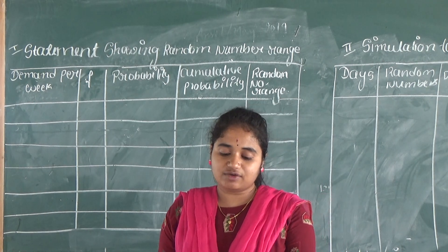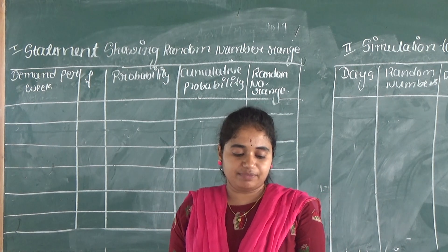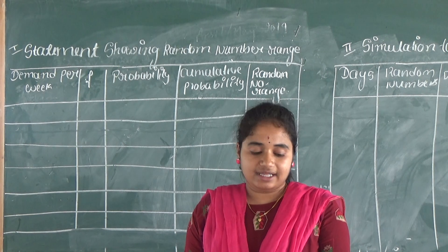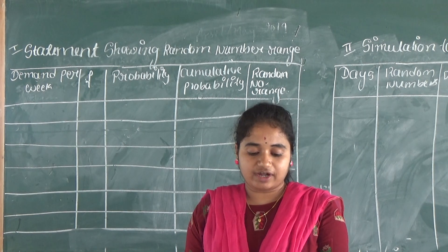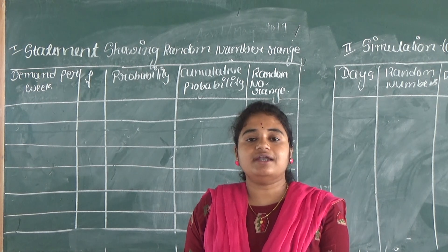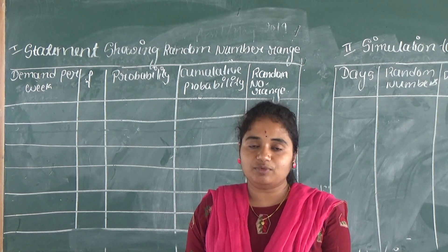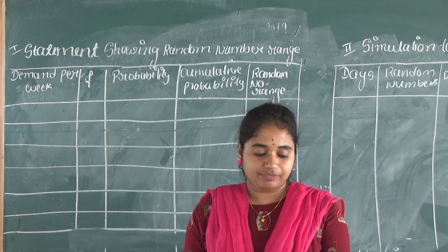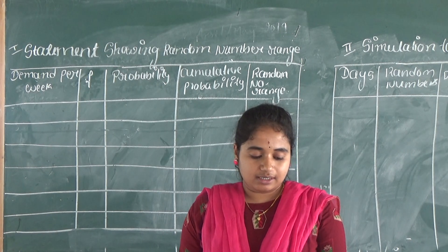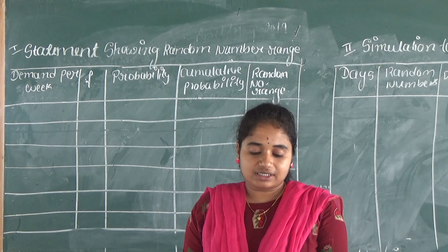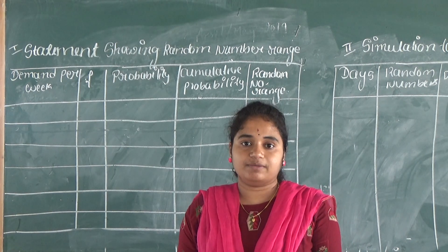Using the following sequence of random numbers, generate the demand for the next 10 weeks. Also find out the average demand per week. So by using demand and frequency, you have to simulate the data for the next 10 weeks and find out the average demand per week.